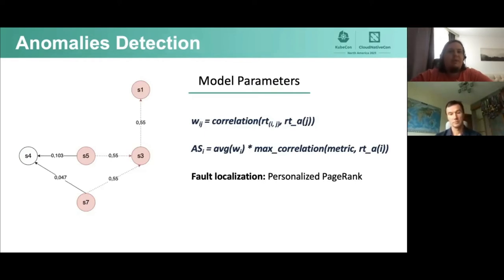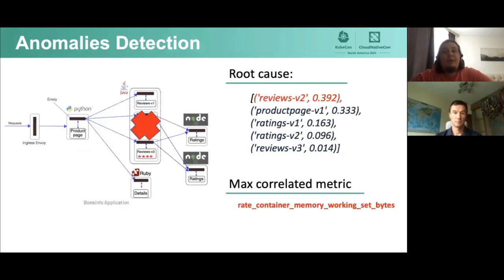First, we have to calculate the weights of edges as a correlation between our response time and average anomalous response time. Next, we calculate the anomaly scores of nodes as a product of average node weight and the maximum of correlated utilization metrics. Then we can use the personalized PageRank algorithm to determine the probable cause of the anomaly. This method produces a ranked list where in first place we find the root cause of the anomalies. We can find the reviews version 2 service. The most correlated anomalous response time metric is rate_container_memory_working_set_bytes, which reflects the essence of this anomaly: heap overflow.